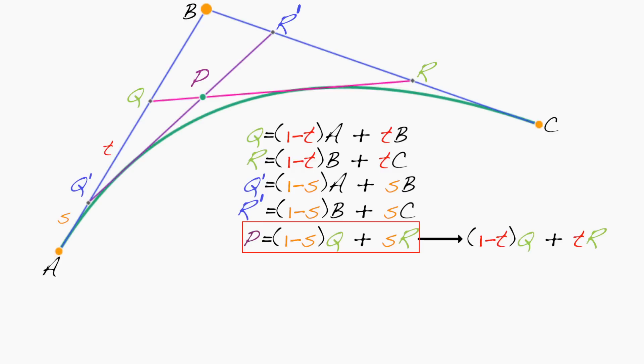Well, what I'm going to do is I'm going to substitute this expression for q in here, this expression for r in here. And if I do that and rearrange, I'll leave that rearrangement to you. But the result is that p can be written as (1-s)(1-t)A + [s(1-t) + t(1-s)]B + stC.